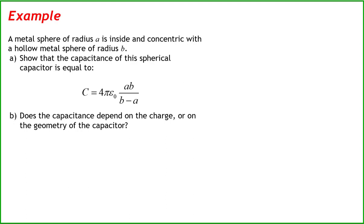A metal sphere of radius A is inside and concentric with a hollow sphere of radius B. Show that the capacitance of the spherical capacitor is equal to 4π times the permittivity of free space, times the ratio of the product of the radii, AB, and the difference in the radii, B minus A.